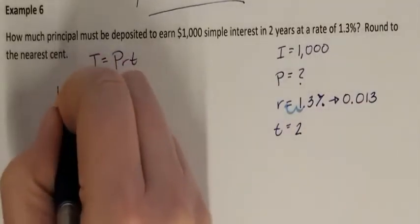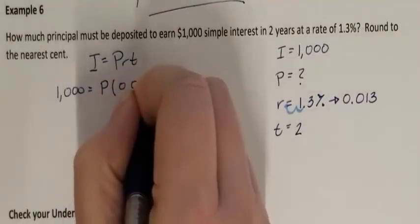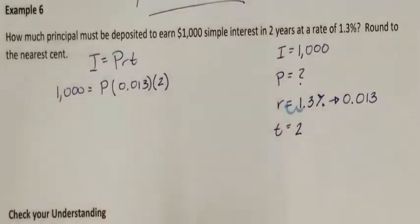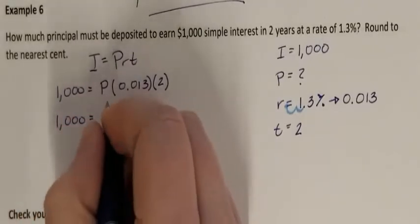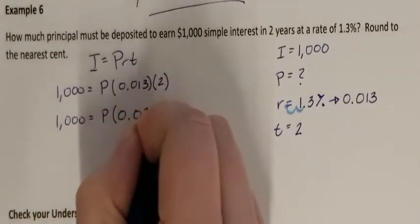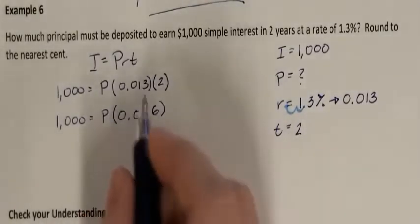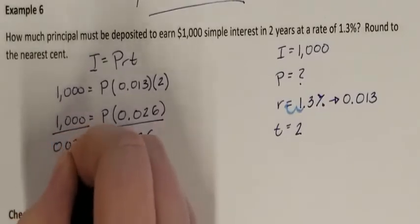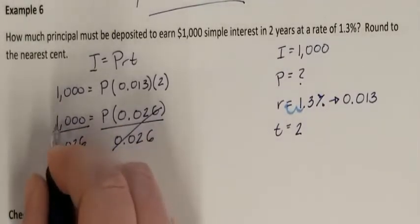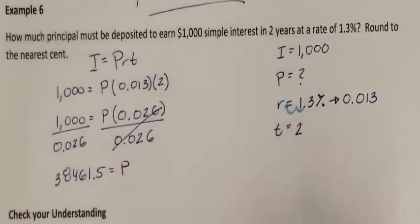I want $1,000 of interest. I don't know P. R is 0.013 and T is 2 years. I need to solve for P. First, I multiply R and T together, giving P times 0.026. Now I need to get P by itself — since P is stuck by multiplication, I unstick it by dividing both sides by 0.026.